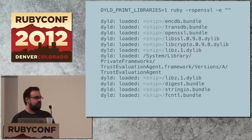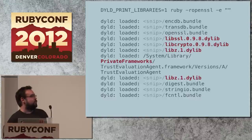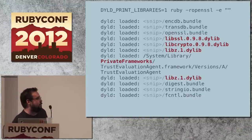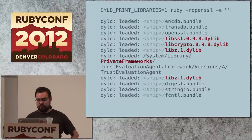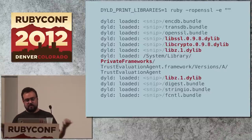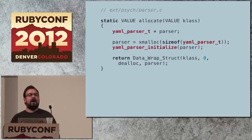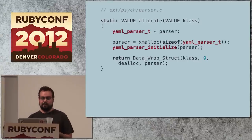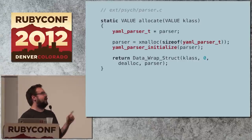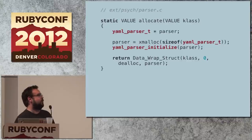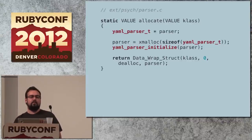You can also do the same thing with OpenSSL and you get a bigger list: libz, libcrypto, libssl. You can see it's loading a private framework called Trust Evaluation Agent. And why does this happen? If you look inside of psych_parser.c, you'll see things like yaml_parser_t, yaml_parser_initialize — Aaron wrote psych. Aaron obviously did not write LibYAML, but he wants to be able to call out to LibYAML from his C code.